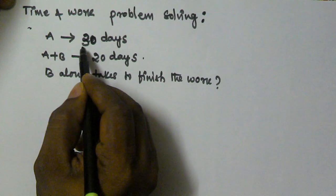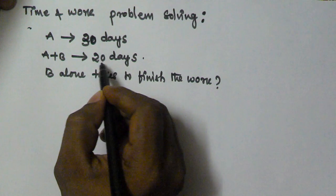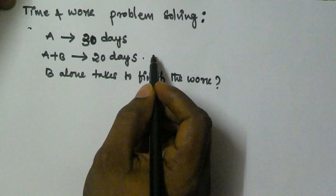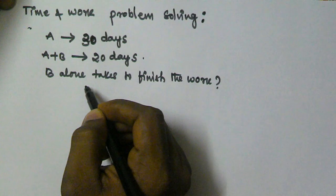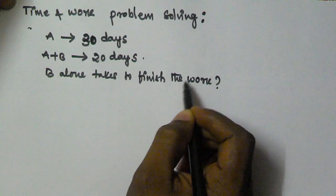A alone takes 30 days to finish the work, and A and B together take 20 days to finish the same work. So now we have to find how many days B alone takes to finish the work.